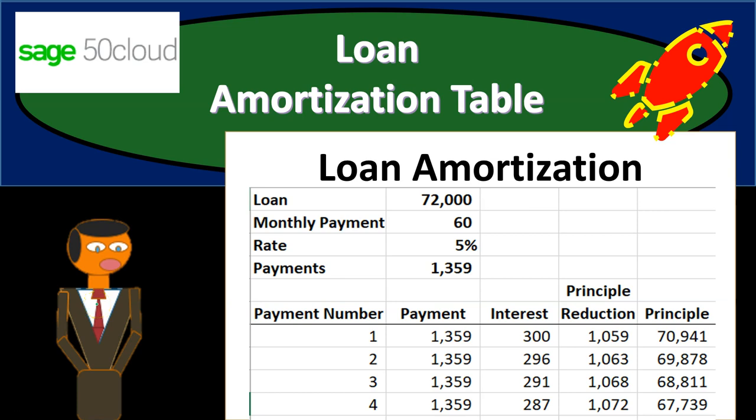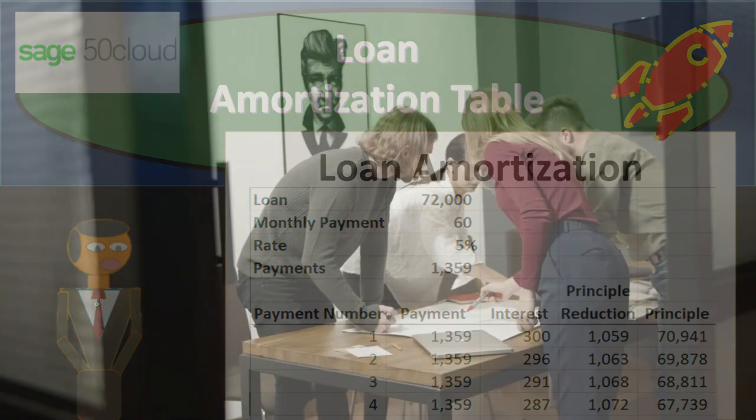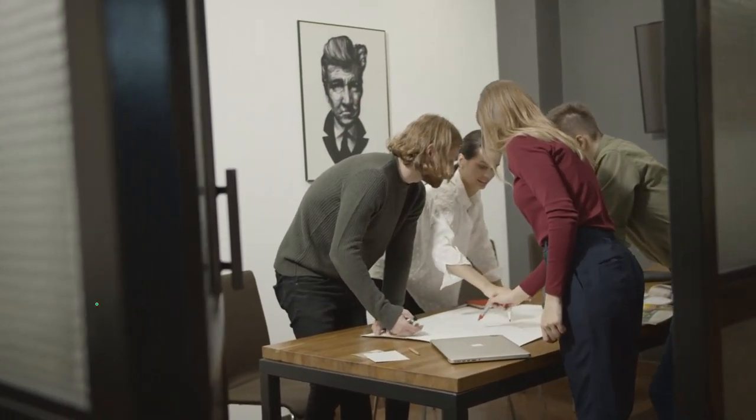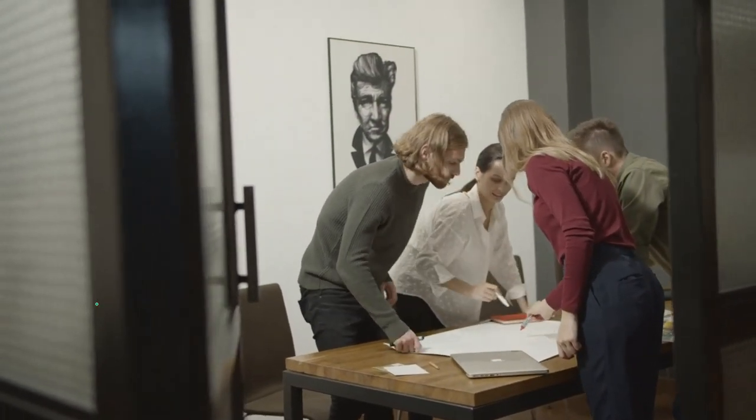In this presentation we're going to think about our loan payments. We have a loan outstanding and we're going to make payments on that loan. We're going to have a principal and interest portion that we need to break out for those payments, and therefore we're going to be constructing and looking into an amortization table. Time to engage with Sage 50 Cloud Accounting.